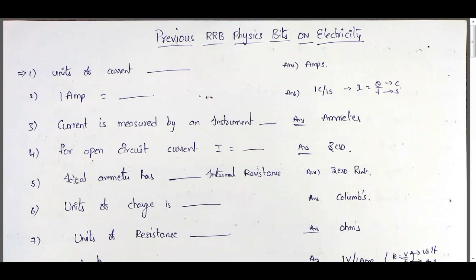Ideal ammeter has zero internal resistance. In case of ideal voltmeter, the ideal voltmeter has infinite internal resistance.